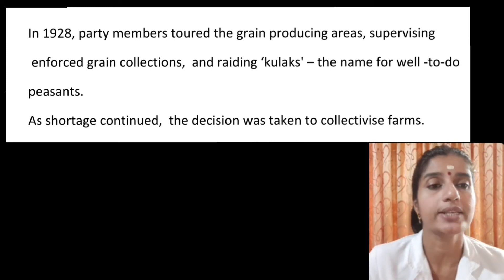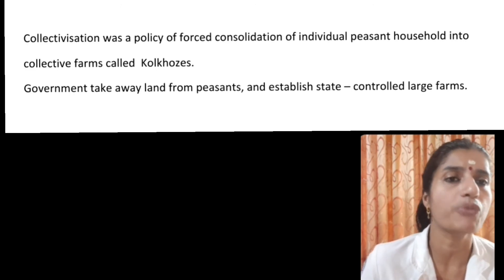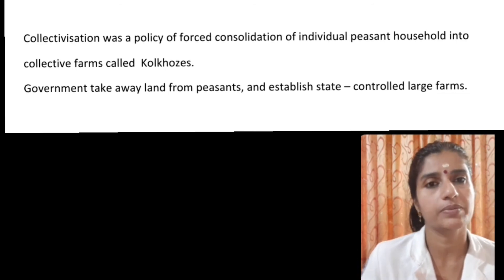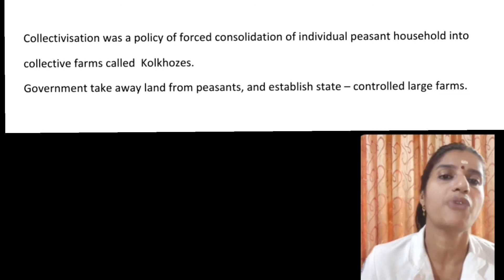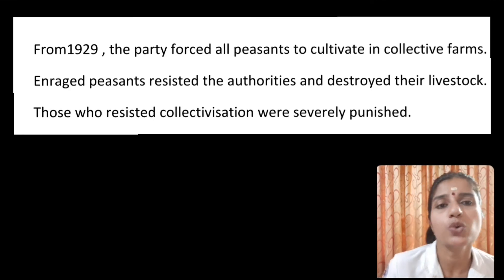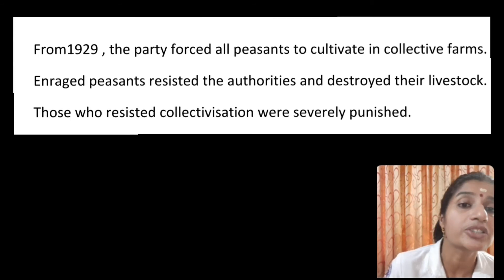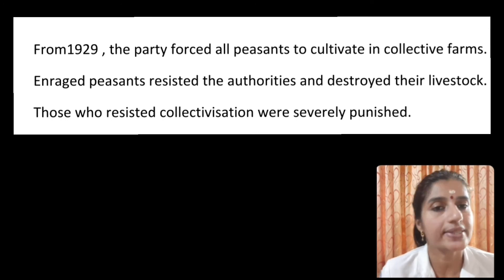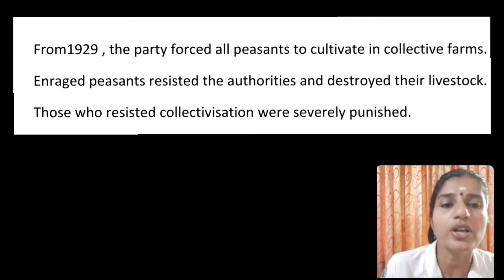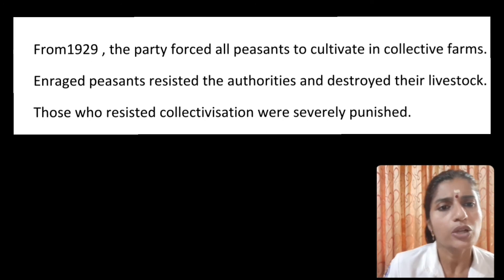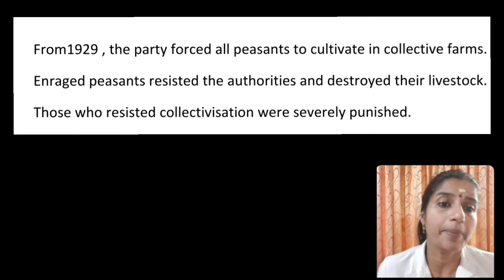As shortage continued, the decision was taken to collectivize farms. Collectivization was a policy of forced consolidation of individual peasant households into collective farms. As part of this, the government took away land from peasants and established state-controlled large farms. From 1929, the party forced all peasants to cultivate in collective farms. Peasants were not happy because their land had been taken away. Enraged peasants resisted the authorities and destroyed livestock. Those who resisted collectivization were severely punished. But Stalin's collectivization program did not bring the desired result.